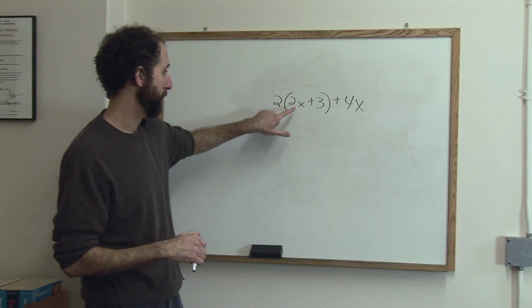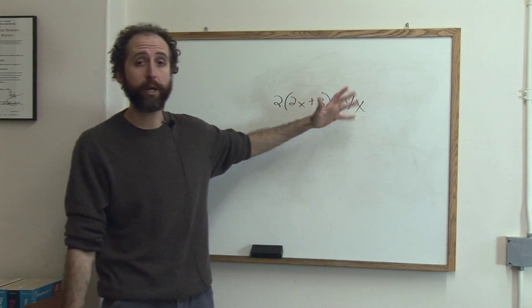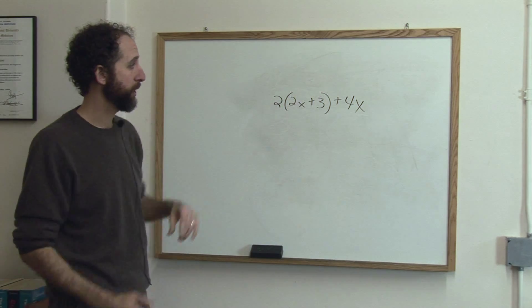First of all, it's called variable because there are variables in it. It's called an expression because we don't have an equal sign. Once you have an equal sign, it's called an equation. Without an equal sign, it's called an expression.